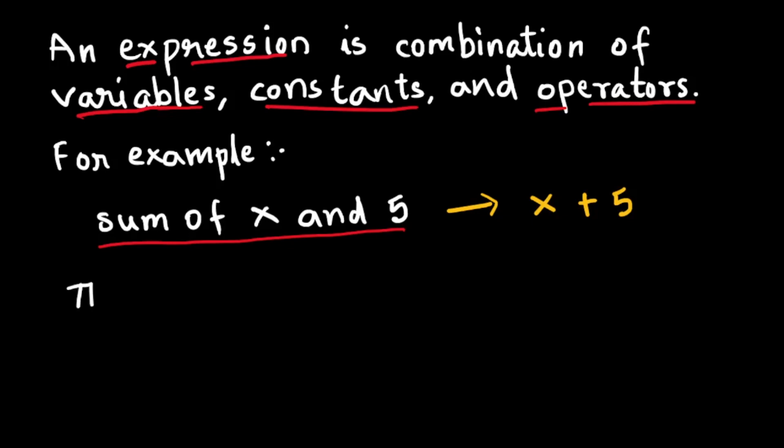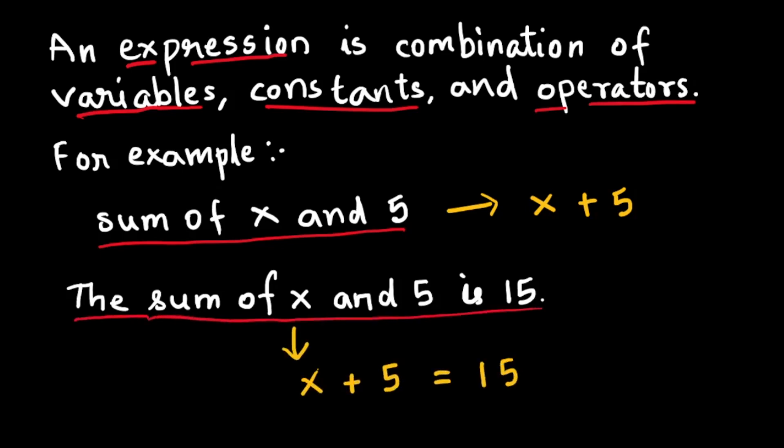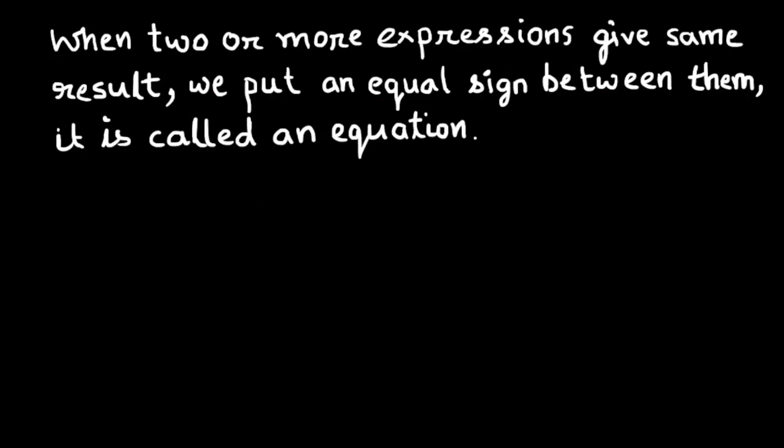But note that it is not a complete sentence. What if we say the sum of x and 5 is 15? This is a complete sentence and shows that x plus 5 is equal to some other expression which is 15. When two or more expressions give same result, we put an equal sign between them. It is called an equation.